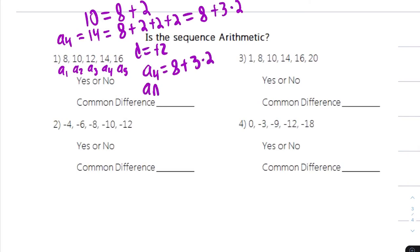The general formula for that one, aN, is 8 plus n minus 1 times 2.